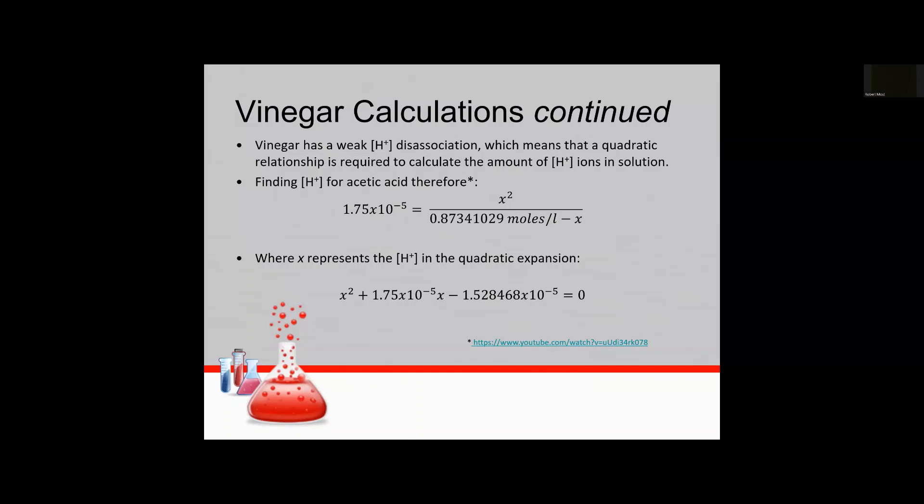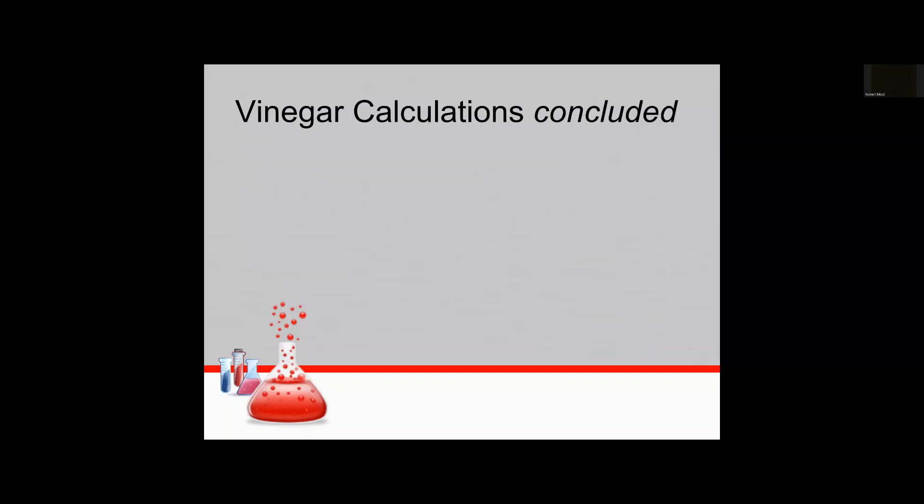So taking those coefficients and putting them into a quadratic equation solver online is what I did next and that gave us an x which is of course the hydrogen ion concentration of 3.9 almost exactly times 10 to the minus 3 moles per liter and that's what it's going to be for acetic acid. So our conclusion after all that was the hydrogen ion concentration for common vinegar 5 percent acetic acid is 3.9 approximately times 10 to the minus 3 moles per liter.